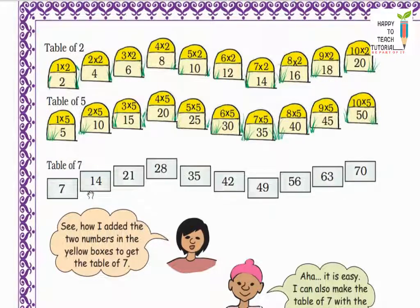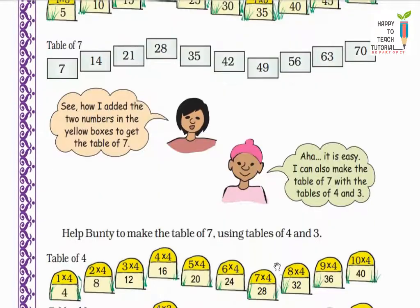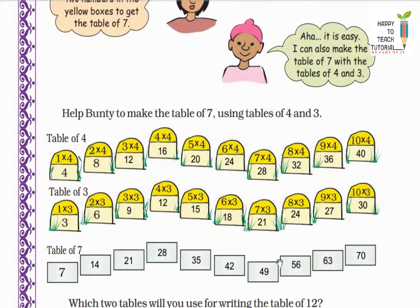Guddu says see how I added the two numbers in the yellow boxes to get the table of 7. Banti says yes it is easy. I can also make the table of 7 with the tables of 4 and 3. So let's help Banti make the table of 7 using tables of 4 and 3.